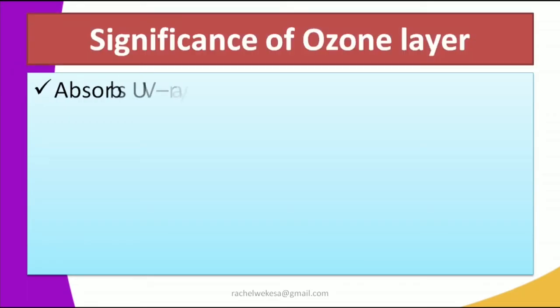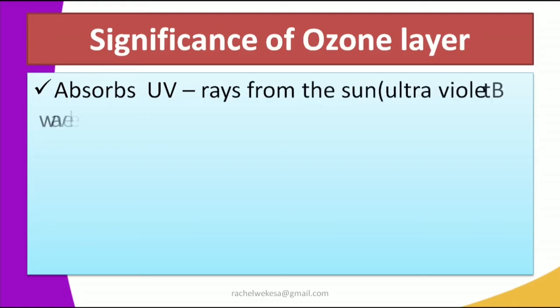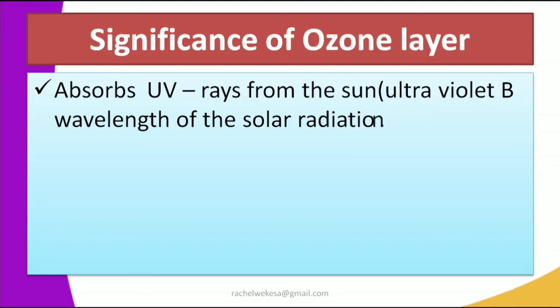The significance of the ozone layer is that it absorbs UV rays — specifically ultraviolet B rays, which are a wavelength of solar radiation. UV rays cause skin cancer, and as the sun shines on the atmosphere, these rays are absorbed by the ozone layer. Some of these rays are cancerous and since cancer does not have a cure, most people are advised to apply sunscreen to prevent direct exposure to the sun.